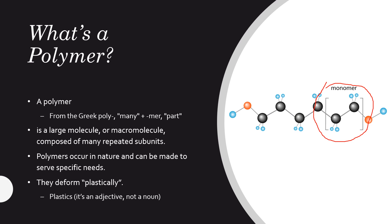Polymers can occur in nature and can also be made to serve specific needs. We see many polymers around us — for example, wood is a type of polymer, cellulose, and DNA is even a polymer. We find polymers basically everywhere. So if it's not a metal or a ceramic, it's probably a polymer. When we talk about polymers we usually refer to them as plastics.